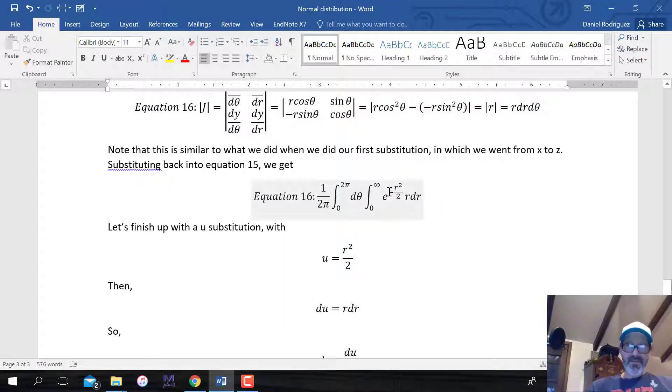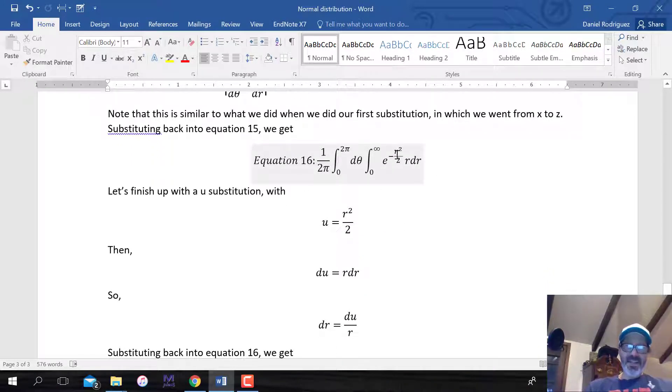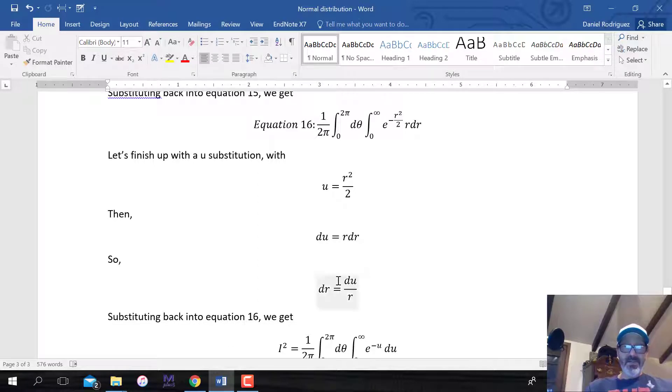Next up, we want to finally solve for this and we'll use a u substitution here. We'll let u equal r squared over 2. This is then going to end up being just minus u. Then we take the derivative of this u function with respect to r. So it's r dr. Solving for dr, because we want to get rid of the dr and turn this into a u, dr equals du over r.